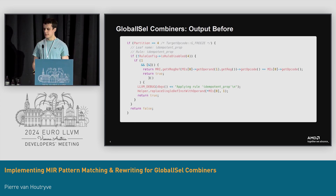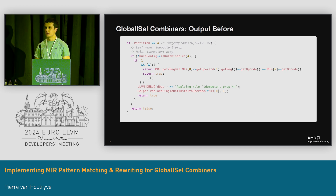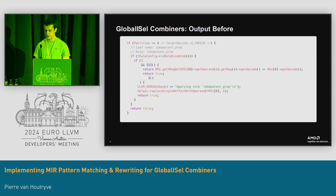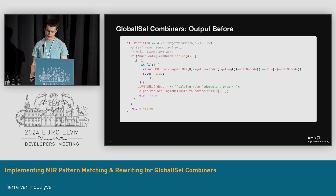The emitter did make some optimizations to reduce code size, but it wasn't as clever as what, for instance, the DAG backend would do. The DAG emits a match table, and that does quite a bit more.